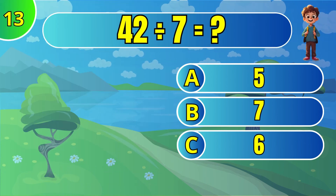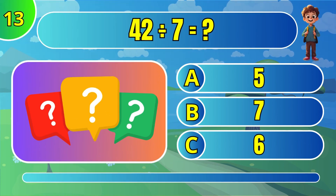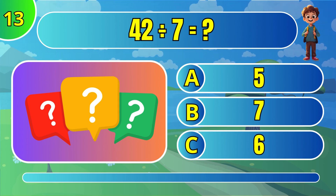What is 40 divided by 7? The answer is C.